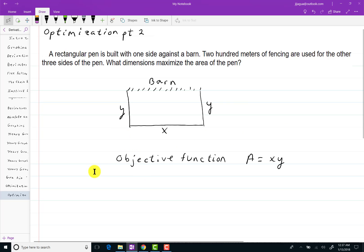And what is our constraint? Constraint is the things that x and y must live according to in this problem. 200 meters of fencing are used. So this side here plus this side must add up to 200 meters. So it looks like 2y + x = 200.